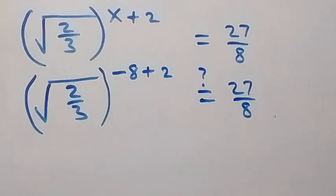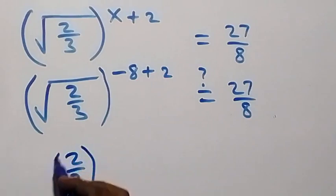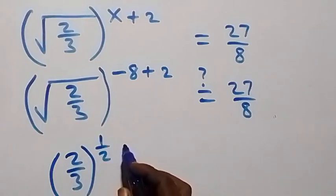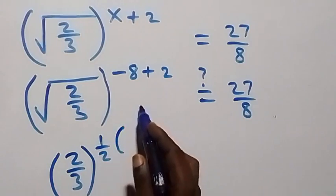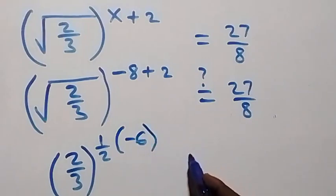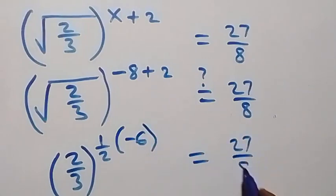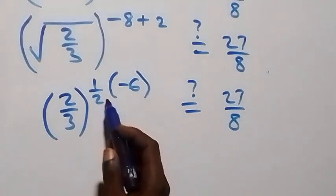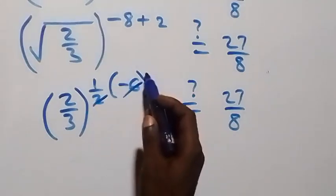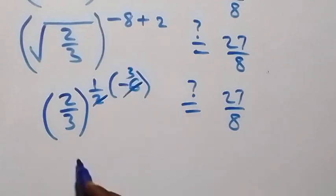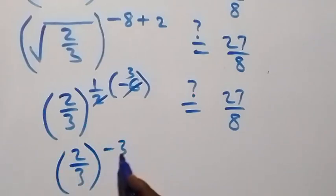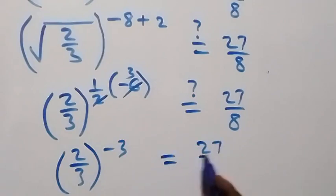Minus 8 plus 2 is minus 6. We can write this as 2 over 3 raised to power half, multiplied by minus 6 — the square root is the same as raised to power half. This gives us 2 over 3 raised to power minus 3, which equals 27 over 8.